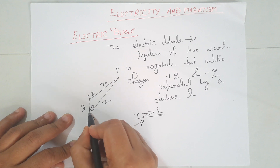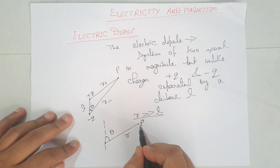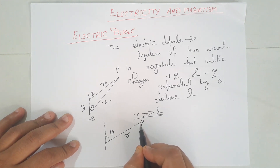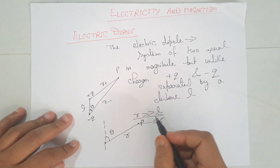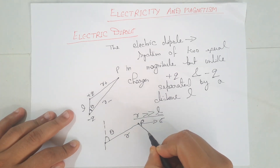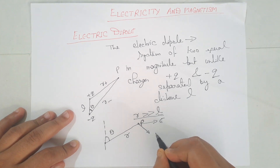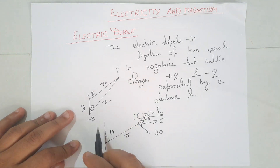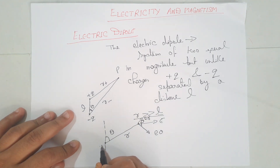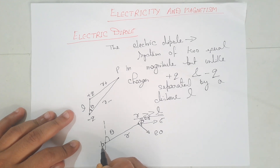If R is much greater than L, then we can assume that this dipole is also point-like. First of all, we have to find the potential of the dipole at point P, and then we can find the electric field at point P. We are using polar coordinates: E-theta and E-R. This is the electric moment of the dipole, small p.